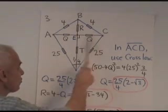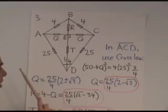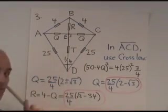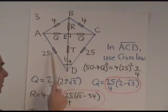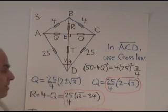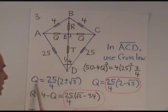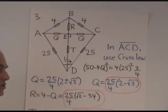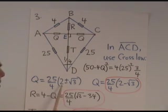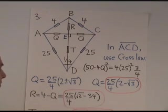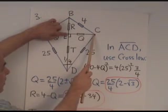So now in this triangle here, we have the cross law: this plus this minus this quadrants, which is 4Q, all squared is 4 times this times this times 1 minus that spread. So there's the cross law, a quadratic equation for Q, which gives us these two values. Well, one of them is too big. The one that we want is the smaller value, 25 over 4 times 2 minus root 3.